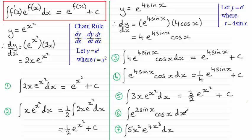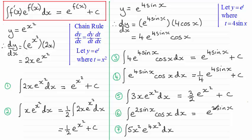In the next one, differentiating 2 sin x gives 2 cos x. Everything is the same except the constant, so I just put down the exponential function e to the power 2 sin x. When I differentiate this it gives a 2 at the front — 2 cos x times e to the power 2 sin x. I don't want that 2, so I put a half at the front. And that will be our answer.